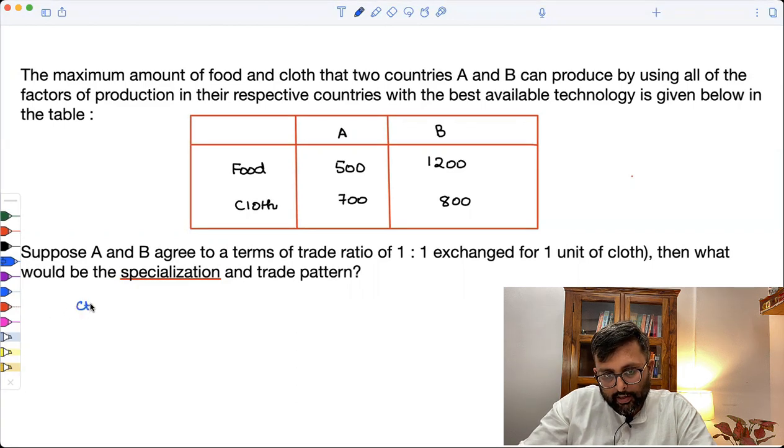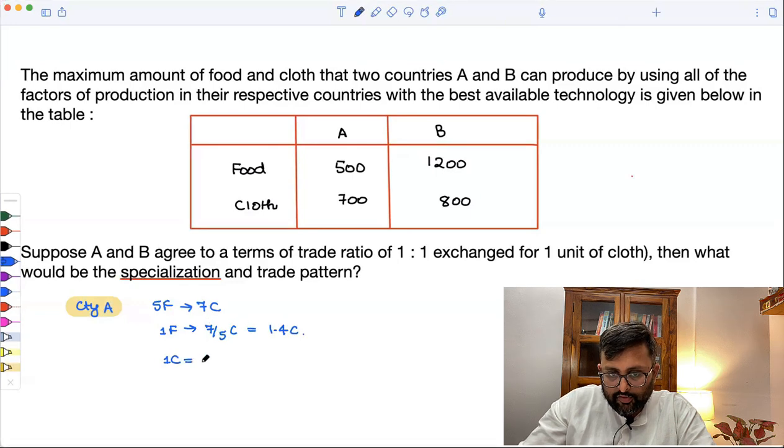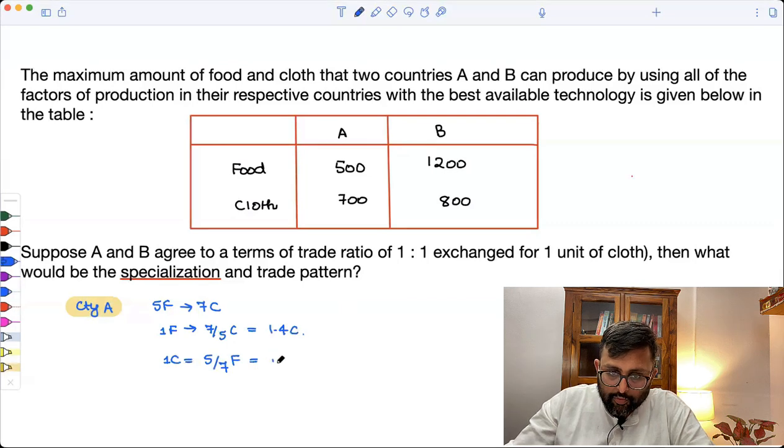For country A, it is 500 units of food for 700 units of cloth. So 1F would mean 7 upon 5C, that is 1.4C. And 1C equals to 5 upon 7F, that will come out to be 0.714F.